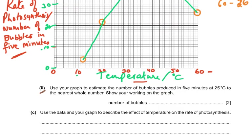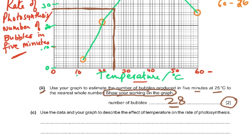Part two: use your graph to estimate the number of bubbles produced in five minutes at 25 degrees Celsius. Draw a vertical line up from 25 degrees Celsius, then a horizontal line across to the y-axis - and you read off 28 bubbles. There are two marks: one for drawing the working lines on the graph, and one for the answer of 28. If you only write 28 without showing the line, you get only one mark.